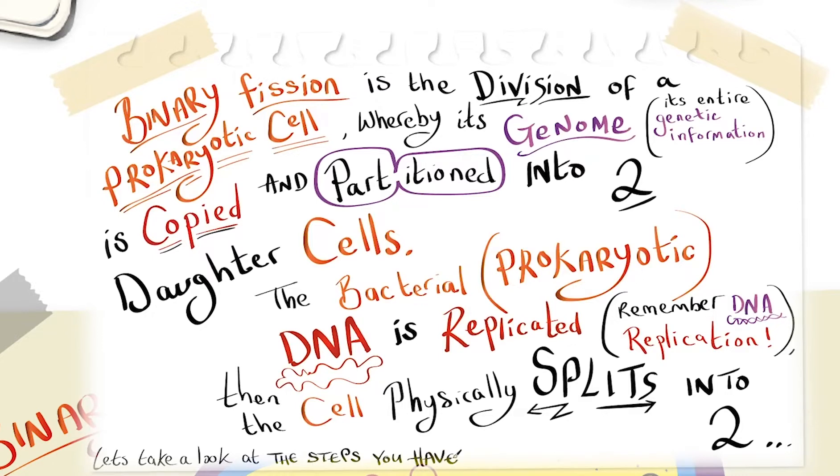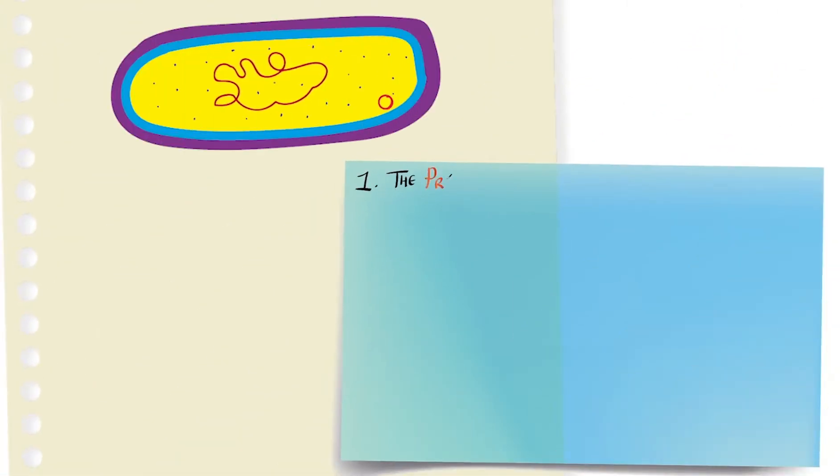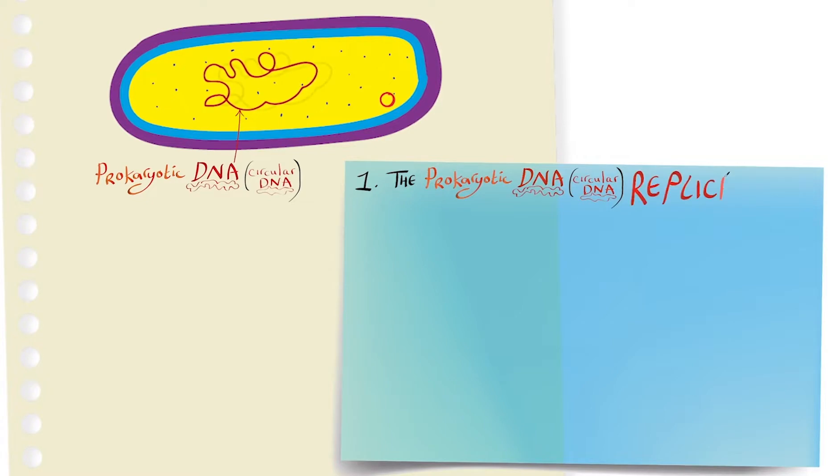So let's take a look at the steps you have to know. Number one, the prokaryotic DNA, that circular DNA, replicates.